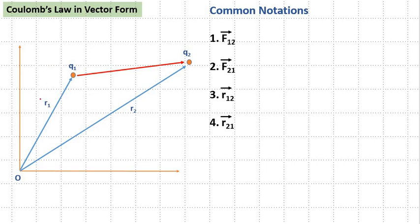This r1 is the position vector of charge q1 and the head of the position vector is always towards the charge whereas the tail is always towards the origin. In the same way, r2 is the position vector for charge q2 whose tail is at the origin and the head is towards the charge.